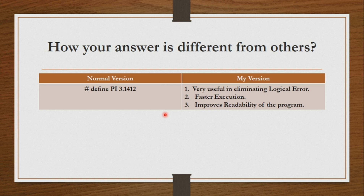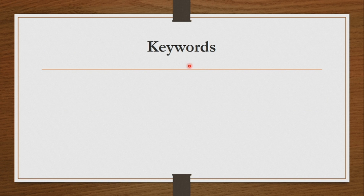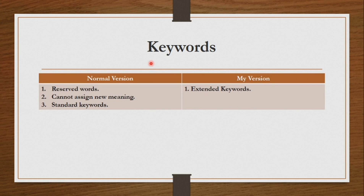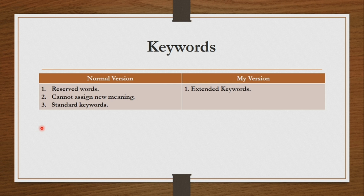Now let me take one more concept: keywords. Make it two columns again — normal version and my version. How do students normally explain keywords? Keywords are also called reserved words. There are 32 keywords in C language. One cannot assign a new meaning to a keyword because their meaning has already been explained to the compiler. We cannot use keywords as variable names. This is the normal version.